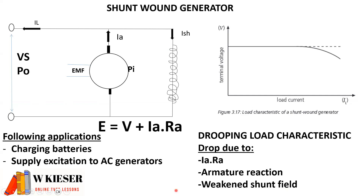Shunt-wound generators are used for charging batteries or for supplying excitation to AC generators.